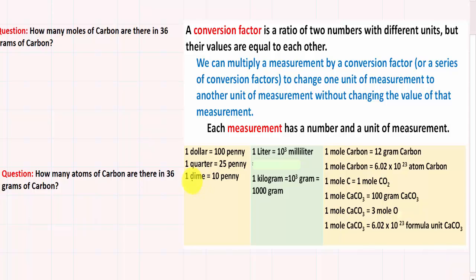For instance, if we are talking about currency, we only talk about values that are defined by a number and a unit, and therefore our conversion factor has two units and two numbers. The same thing with unit measurement for volume — we have one liter, which is a number and a unit, equal to a number and milliliters. So it's defined by a number and a unit. But in chemistry, it is more complicated than that.